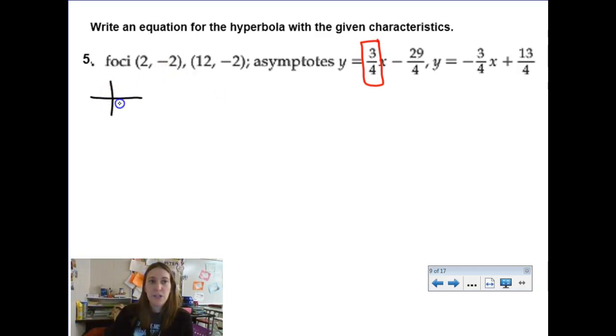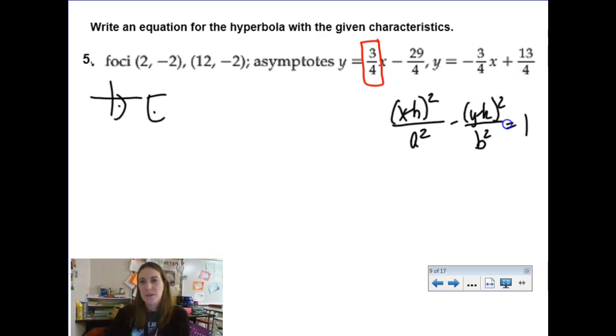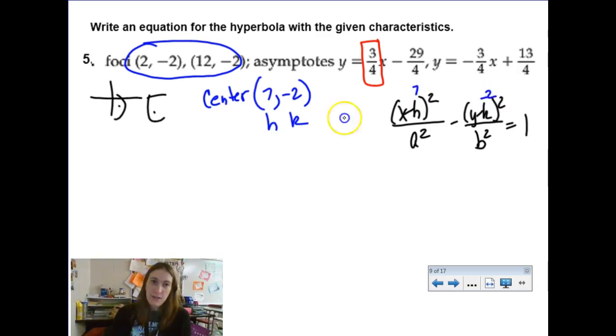All right, so first, a little sketch for myself. 2, negative 2, and 12, negative 2. So we're going to have... Totally nailed it. Okay, we have a horizontal one. So it's x minus h squared over a squared minus y minus k squared over b squared equals 1. All right, let's figure out all these clues. I'm going to start with the midpoint. The midpoint would be our center. So, our center is at 12 plus 2 is 14, cut and have 7, comma negative 2. So there's your h and k. And then we'll go ahead and throw that here. This is a 7. This is a negative 2.